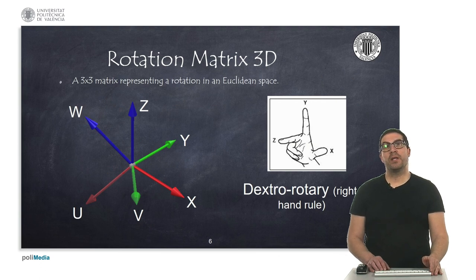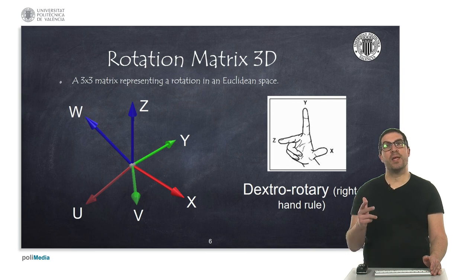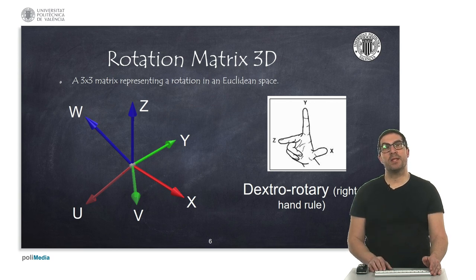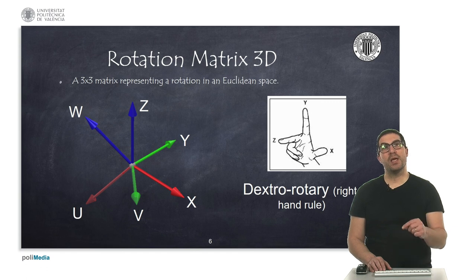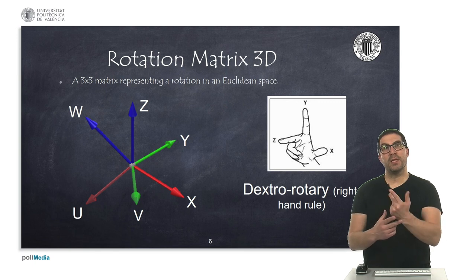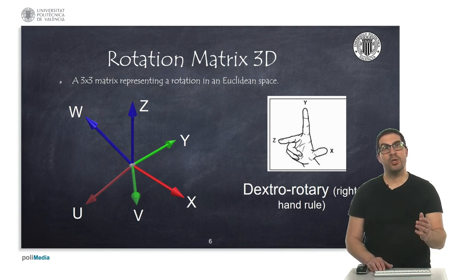Rotation in a 3D Euclidean space can be defined with a 3 by 3 matrix. We use dextral rotary systems — that is, reference systems whose axes are arranged based on the right-hand rule, as shown in the figure. A rotated reference frame will be represented with the axes u, v, and w, while the fixed frame will use the coordinates x, y, and z. The fixed system will be rotated and transformed into the u, v, and w reference frame.